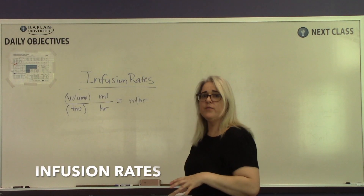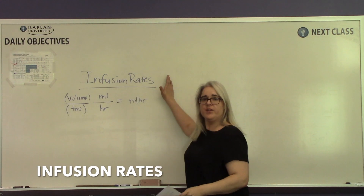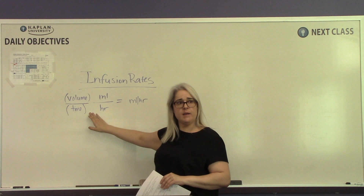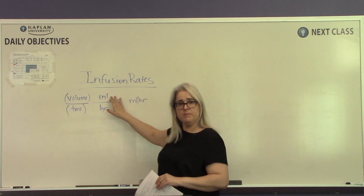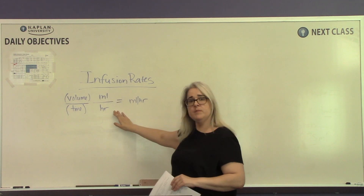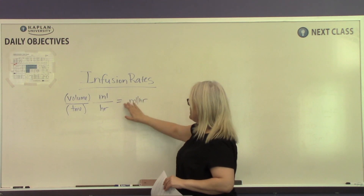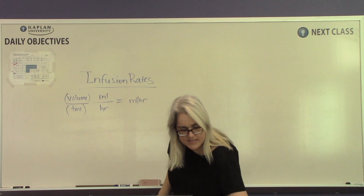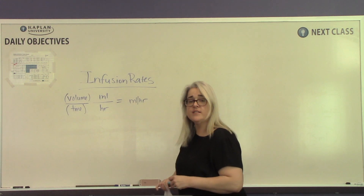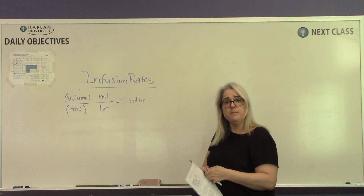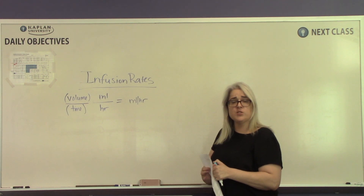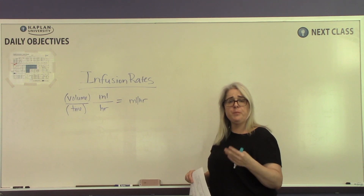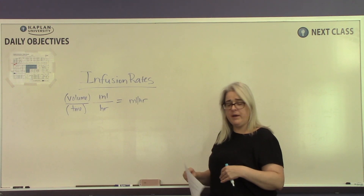The next example covers how to calculate infusion rates. Infusion rates are volume over time — volume is always in milliliters and time is always in hours — giving us milliliters per hour as our answer. This is how you will program your IV pumps for infusion rates, determining how many milliliters of IV fluids or medication your patient should receive in a set amount of time.